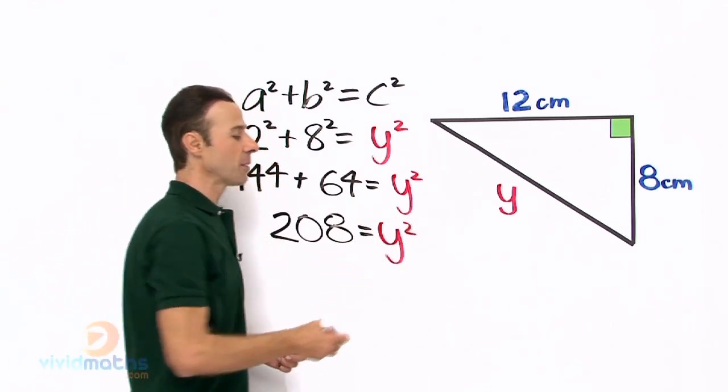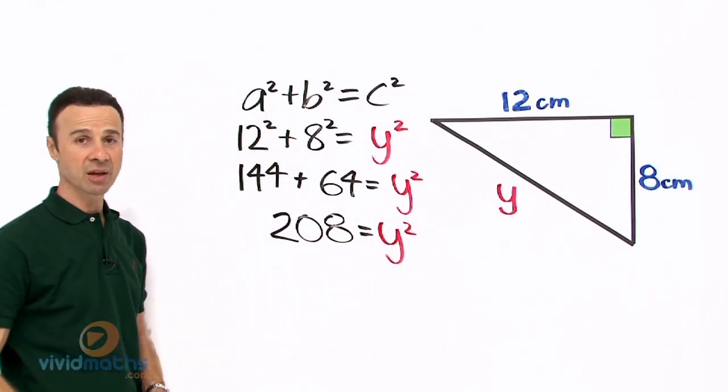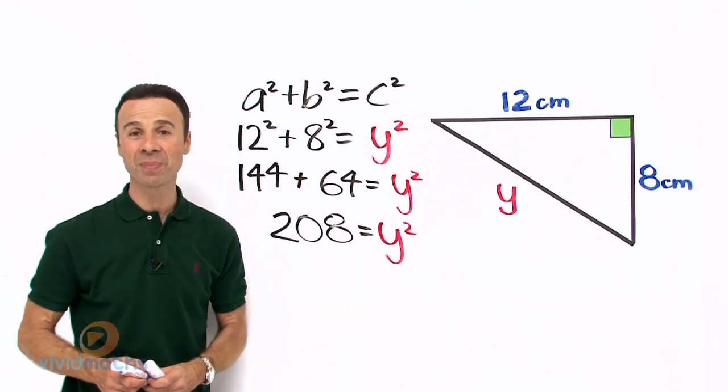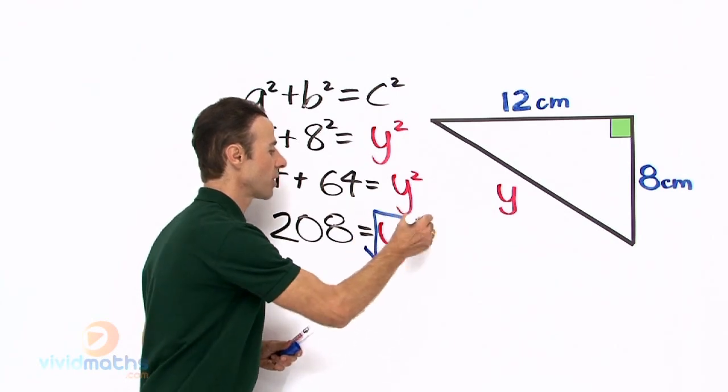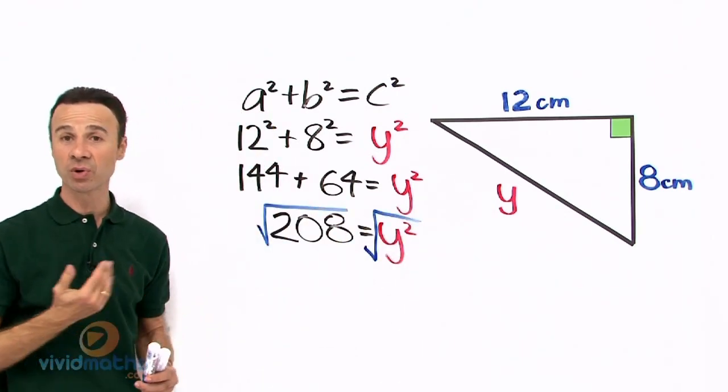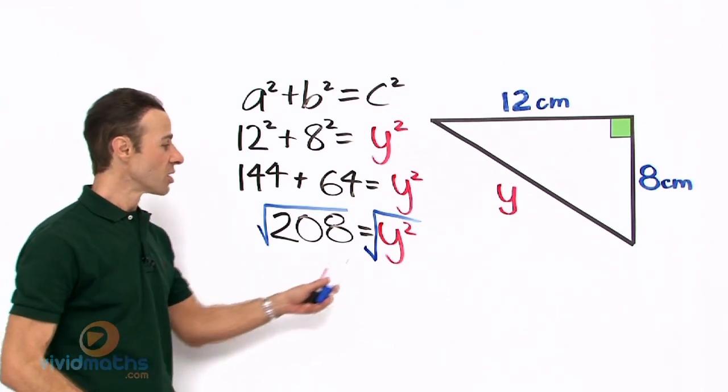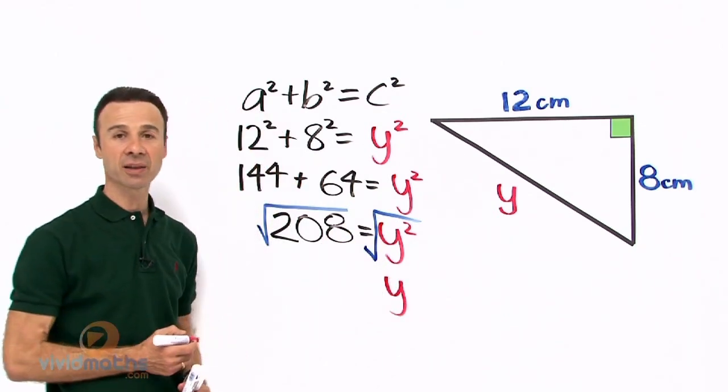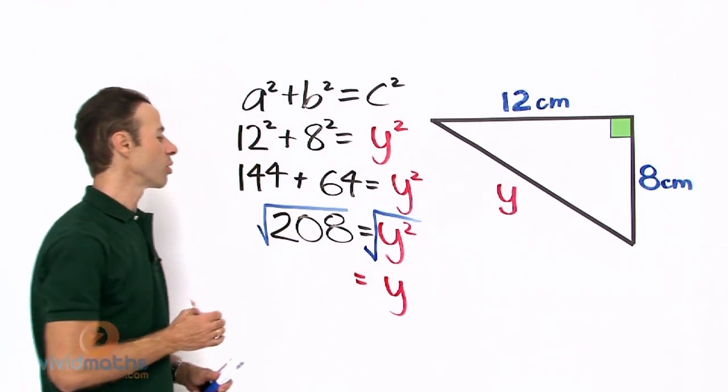Now the third step is to take the square root of both sides. Remember, when we take the square root of a y squared, it reverts back to being a y. Square root there, square root there. Remember, if we square root on one side, we always square root on the other side also.